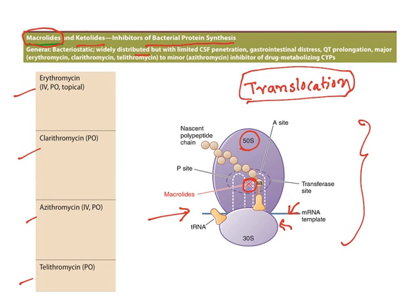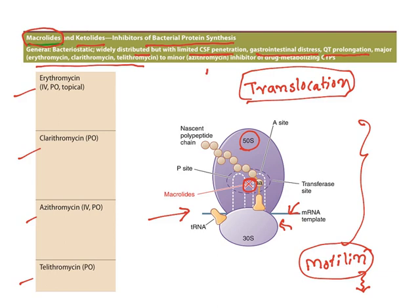Macrolides are bacteriostatic, widely distributed but with limited CSF penetration, so they cannot cross the blood-brain barrier. They will show gastrointestinal distress — the reason is in the intestine we have motilin receptors which are stimulated by macrolides, causing GI distress ranging to diarrhea. They will also cause QT prolongation — these drugs majorly cause QT prolongation, but erythromycin causes only a limited amount. They are also inhibitors of drug-metabolizing cytochrome P450 enzymes.